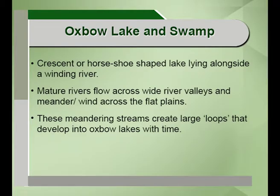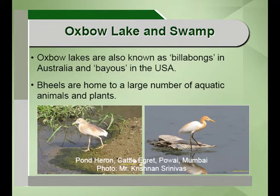Oxbow lakes are crescent or horseshoe-shaped lakes found alongside a winding river. They are often visible as a sight to watch along the roads towards Jammu and Kashmir or the Ladakh region. Mature rivers flow across wide valleys, meander and wind across flat plains forming large loops, which develop into oxbow lakes over time. Oxbow lakes are also called billabongs in Australia and bayous in the USA. Beals are home to large numbers of aquatic animals, plants, and birds like the pond heron and cattle egret.